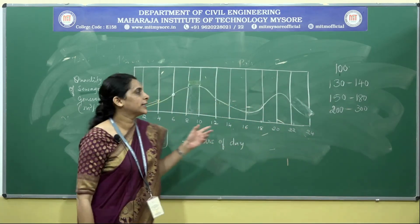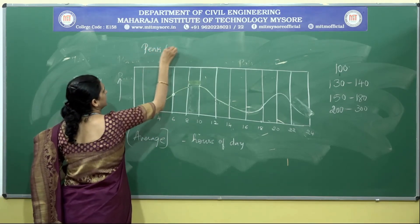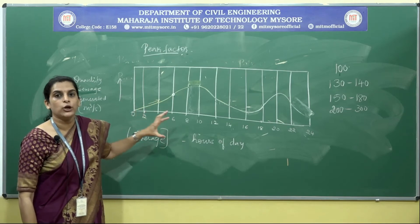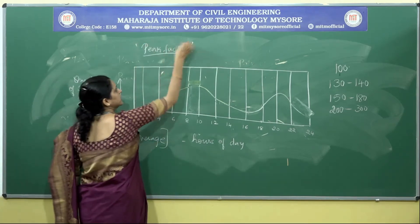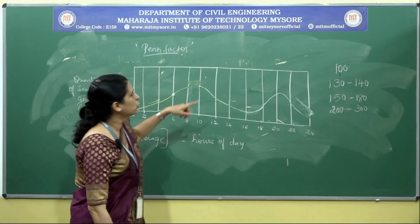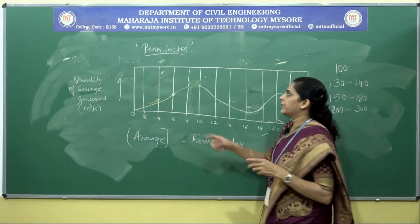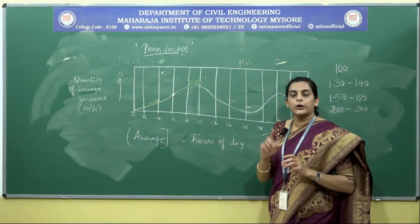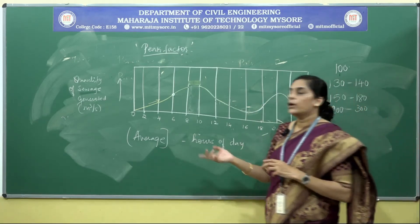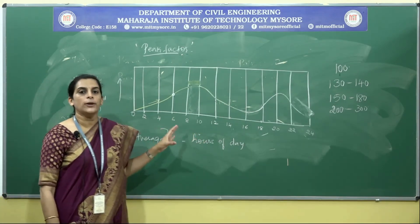Considering these things leads us to the concept of the peak factor. As we are calculating the flow for annual load, we must consider the peak factor. The peak factor is not constant — it varies depending on the population. For every annual average flow, we multiply by the peak factor, which depends upon the contributing population.